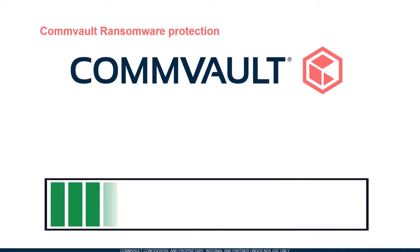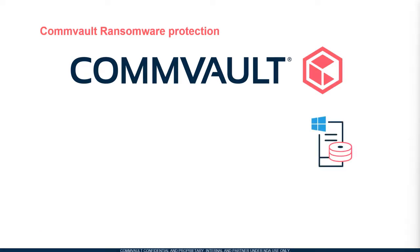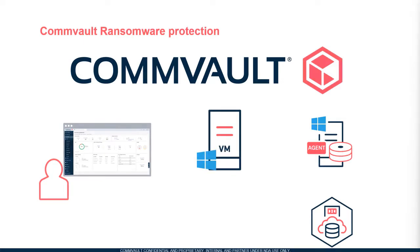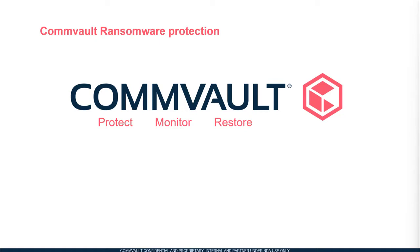Third, because software vendors focus their ransomware protection updates on the most recent version of their software, legacy systems might not get ransomware updates. Commvault software provides backup protection of legacy systems and also provides users with access to the data directly from backup media. Users can also selectively restore data to alternate or updated platforms including virtual machines. The most important step an organization can take is to use the full power of Commvault software to protect, monitor, and recover data when threatened by ransomware.